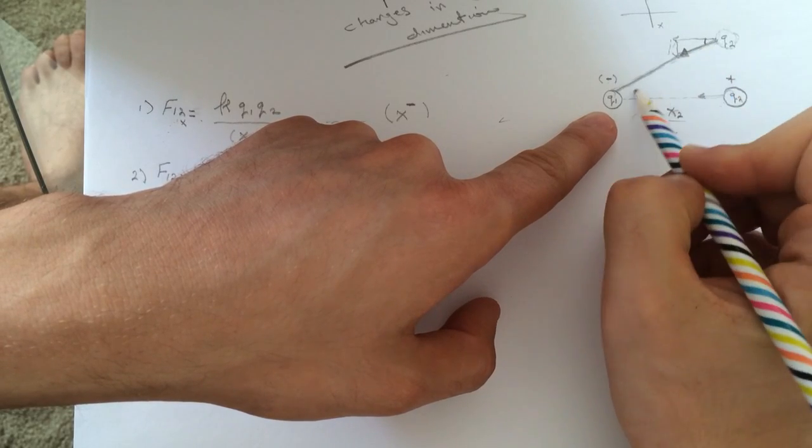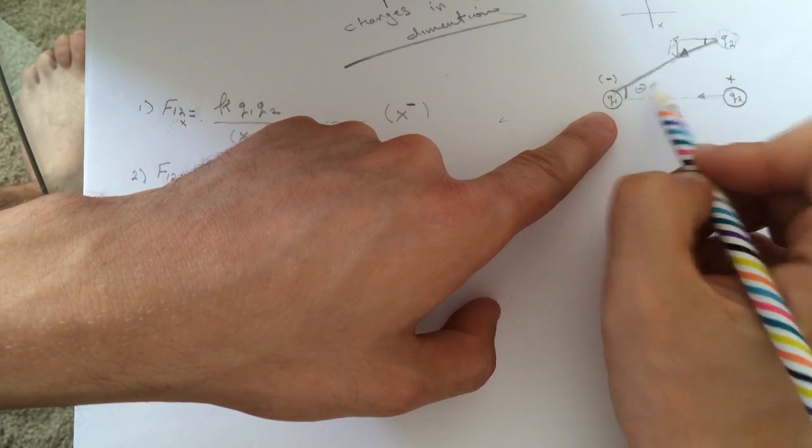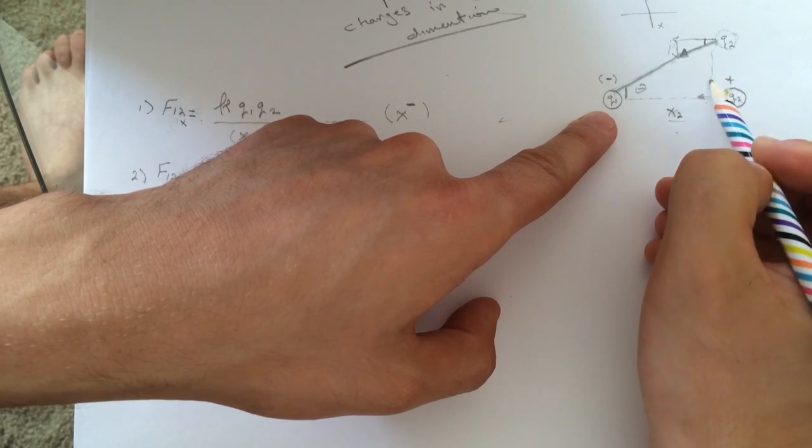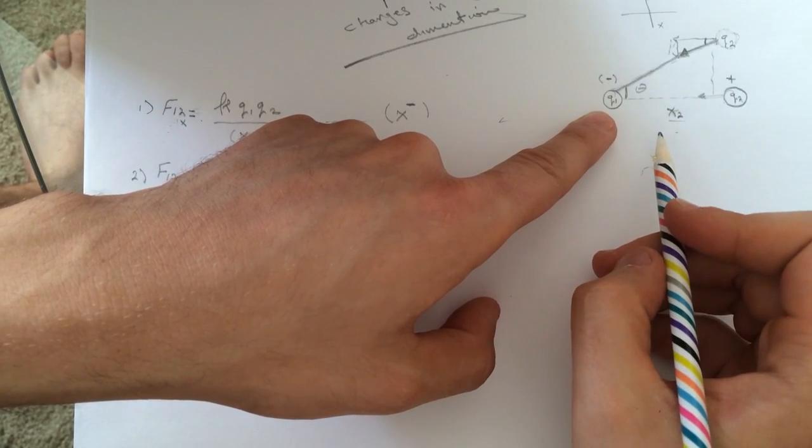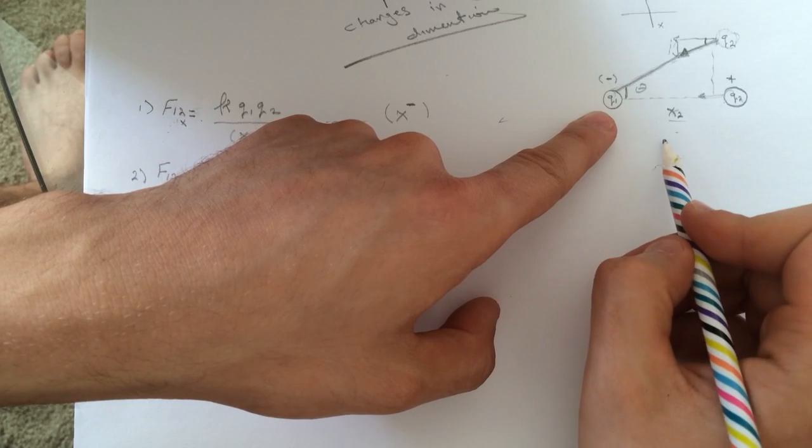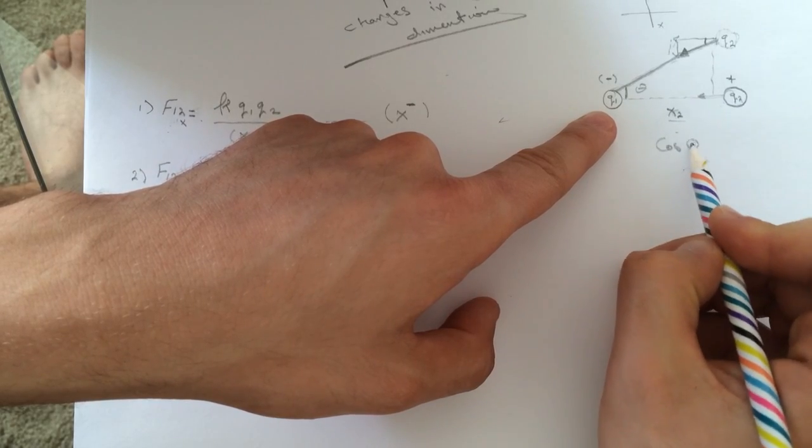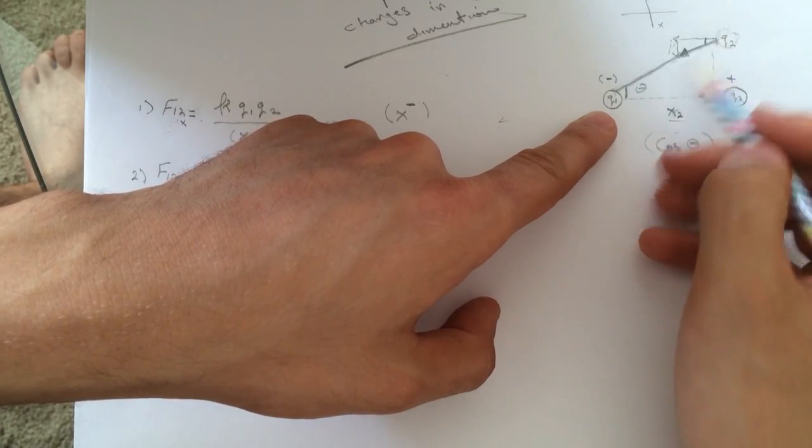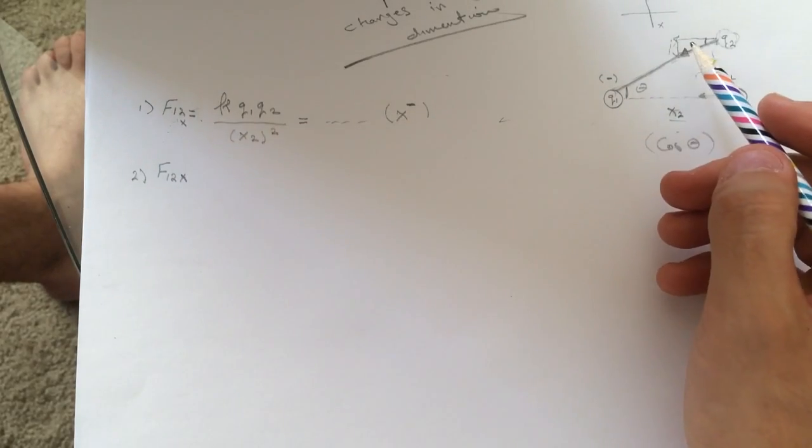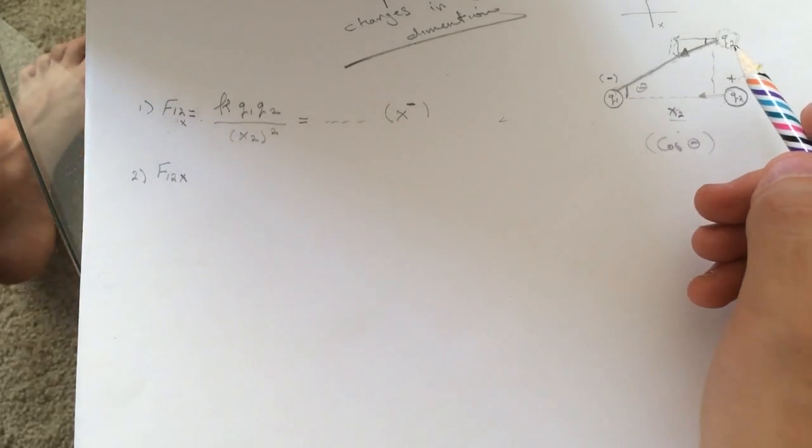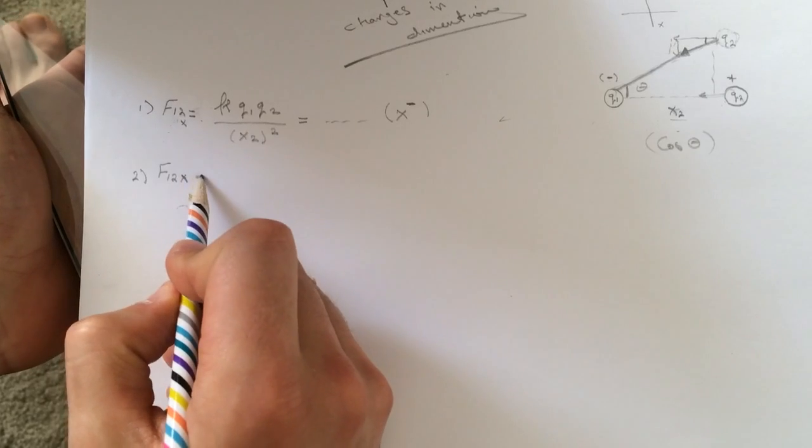This angle here is the same angle as here. So we just do the cosine of theta times the force that we got here and then we'll get the force in the x direction. So we'll do the same thing.